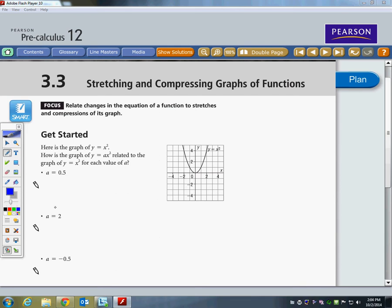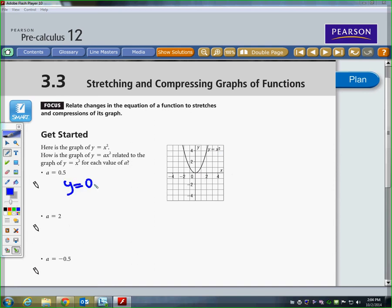If we put an a value out front, if you recall, it causes it either to be opening upwards or opening downwards, and it changes how narrow or wide it is. If we put a 0.5 in there, it's positive so it's going to be opening upwards. Instead of y is equal to x squared, now we're talking about y is equal to 0.5 x squared. So let's say if we put in a value of 4 for x, 4 squared is 16 times a half, pardon me, would be 8.